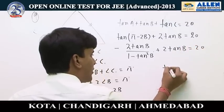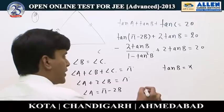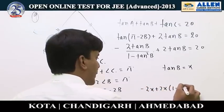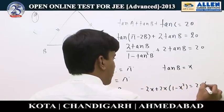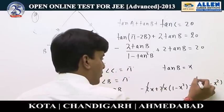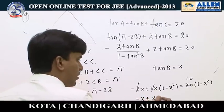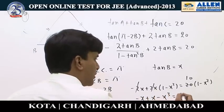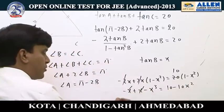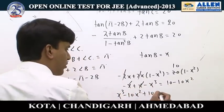Substituting tanB as x and multiplying through, we get minus 2x plus 2x(1 minus x²) equals 20(1 minus x²). Dividing through by 2, the x terms cancel and we arrive at x³ minus 10x² plus 10 equals 0.